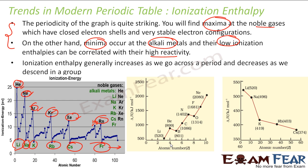Across a period, the ionization enthalpy is generally increasing. There is a slight variation — for example, we will discuss why boron has a lower ionization enthalpy than beryllium, and why oxygen has a lower ionization enthalpy than nitrogen. But the general trend is that it increases as we go across a period.